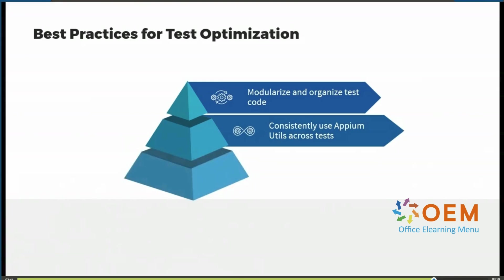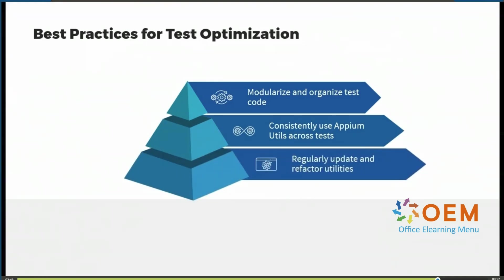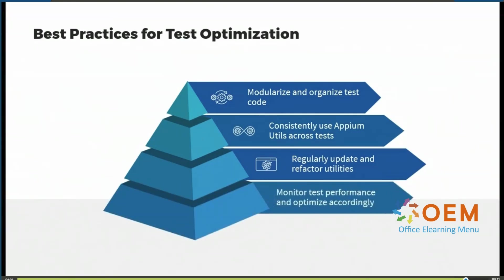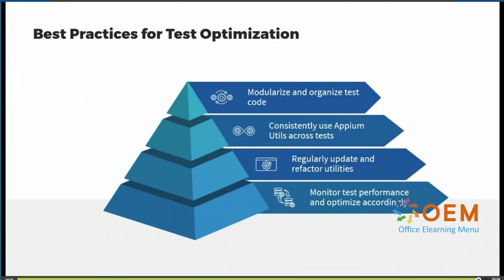Another best practice is to regularly update and refactor utilities in order to update the locators and all the elements of our mobile application for validity and error-free test execution. Finally, we need to monitor our test performance and optimize based on the output of our monitoring process.